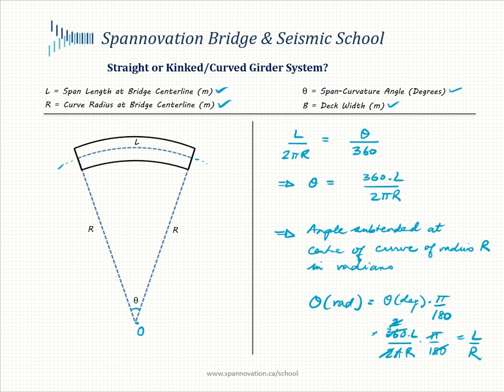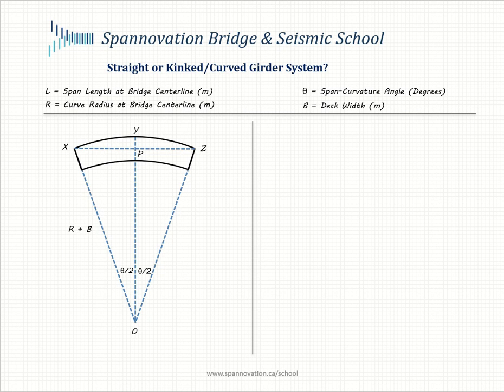This quantity L over R can also be called the span curvature angle. Next, we go to mid-span and calculate the ordinate PY. We divide the arc into two equal halves, splitting angle theta. PY is the maximum distance between chord XZ and arc XYZ, which occurs at mid-span. YP equals OY minus OP.